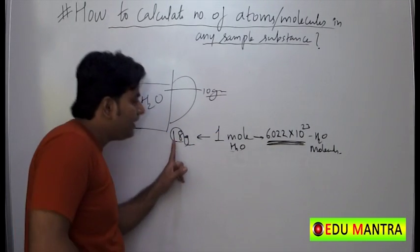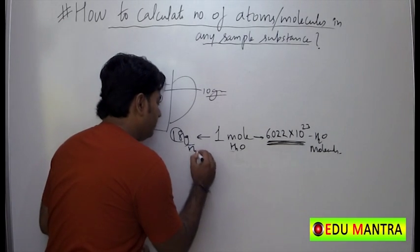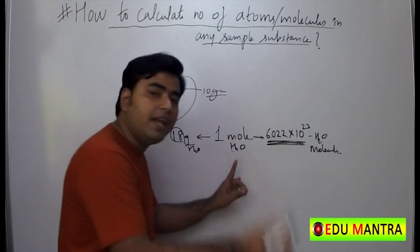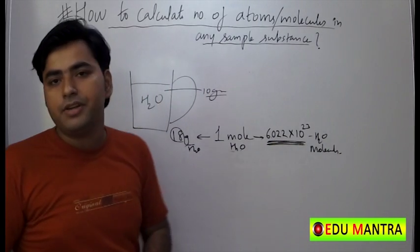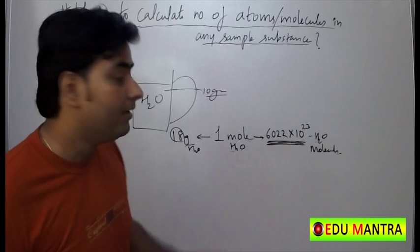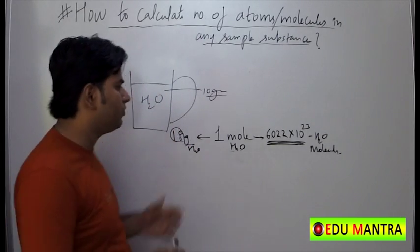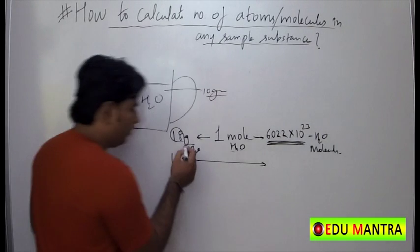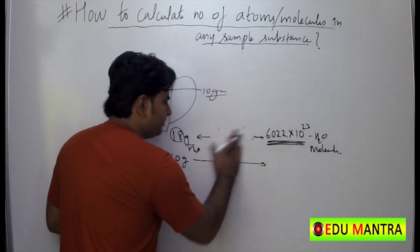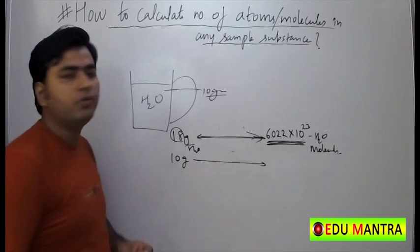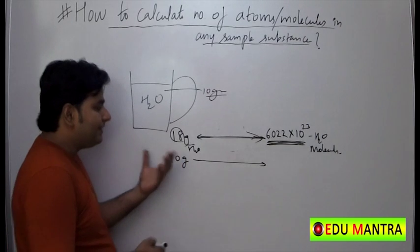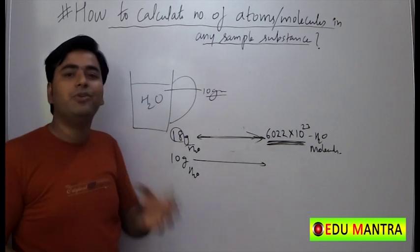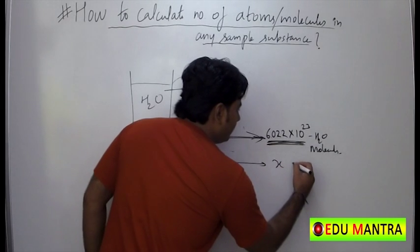So 18 grams of water contains one mole of water molecules, and one mole means 6.022 × 10²³ water molecules. Now we are very close to the final step. If it is 10 grams of water, what is the number of molecules it contains? Let that be x water molecules.